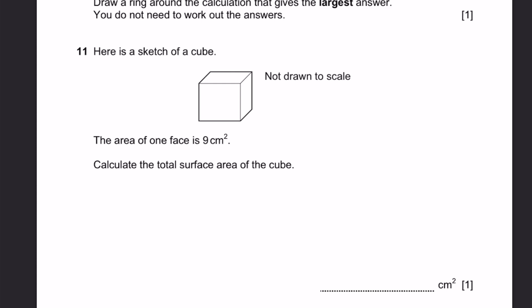Question 11. Here is the sketch of a cube. The area of one face is 9 cm2. Calculate the total surface area of the cube. So, there are six faces on a cube. And each face has an area of 9 cm2. So, the total surface area, that will be equal to 6 faces times 9 cm2 per face. 54 cm2. That's the answer.